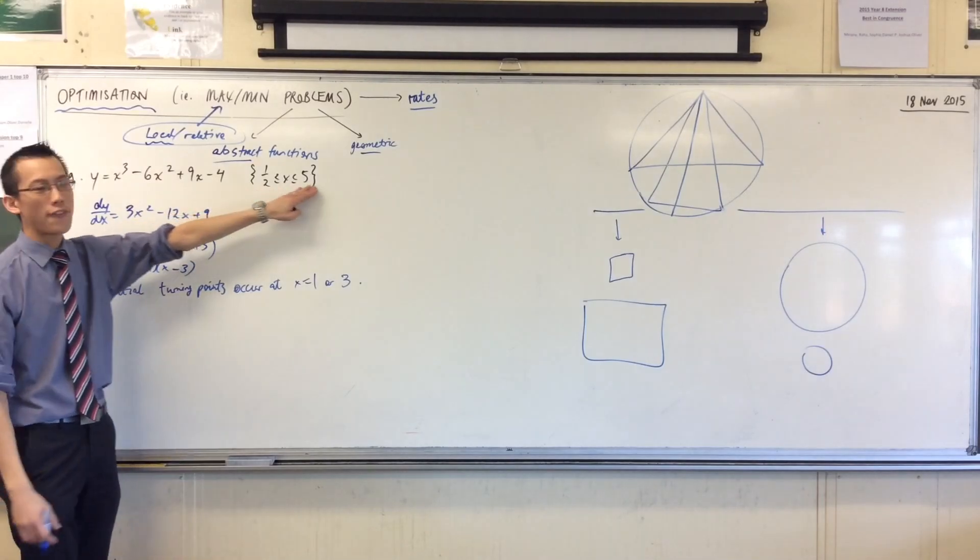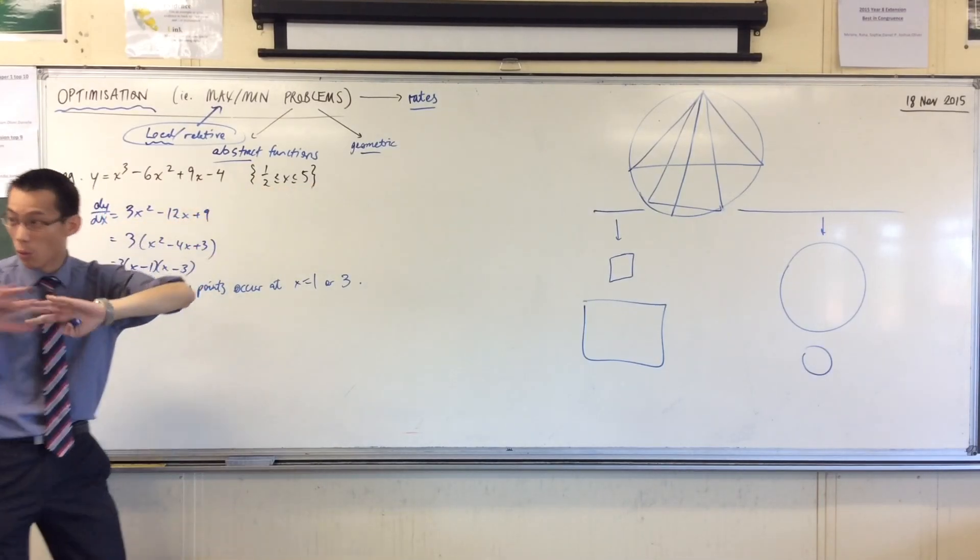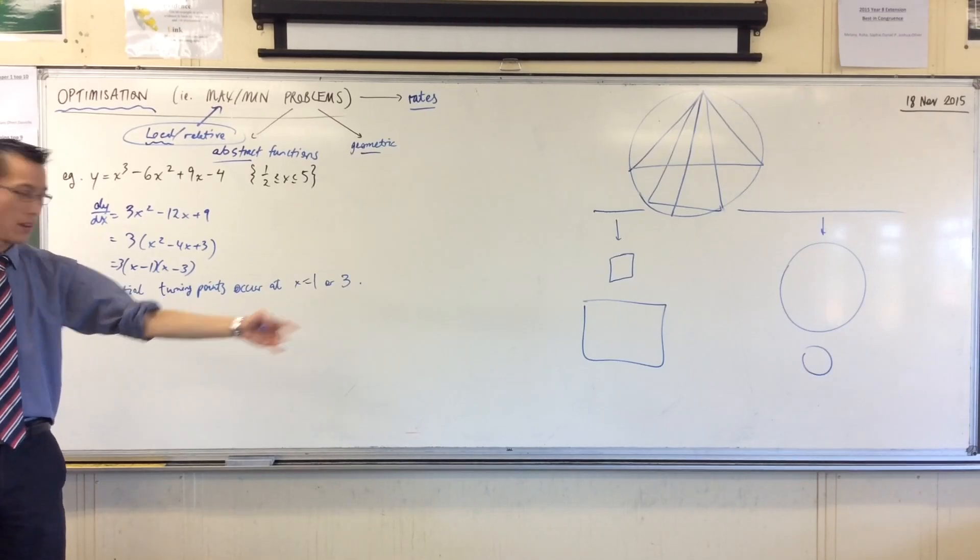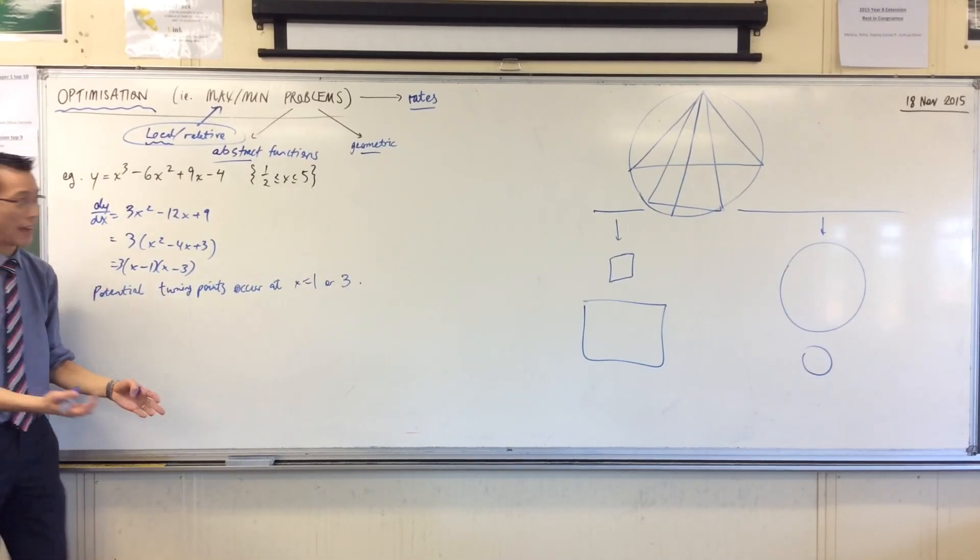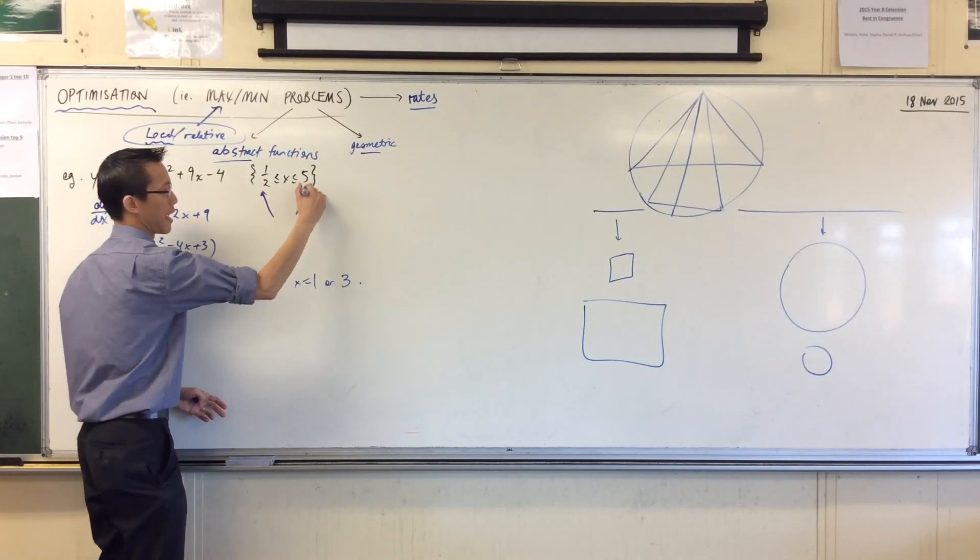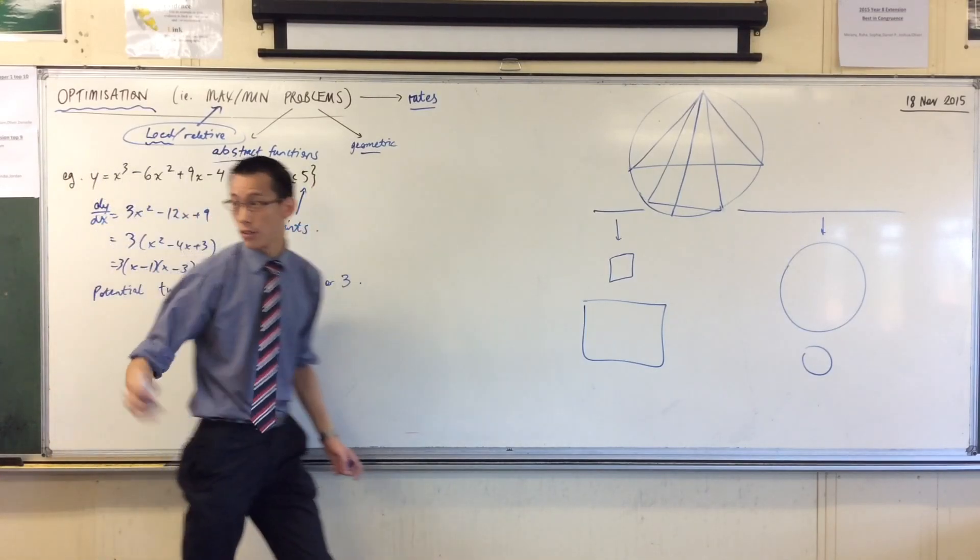So therefore, I actually need to have a look at how far can I go. This is corresponding to what are all the different numbers I can try. So therefore, these potential turning points are not the only ones I need to look at. I also need to look at the endpoints, or they're also called boundary values.